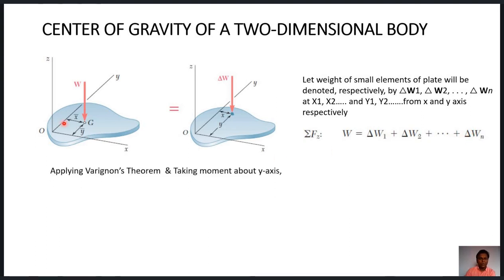To locate x̄ and ȳ, we use the concept of Varignon's theorem, which states that the moment of the resultant about an axis is equal to the sum of moments of all the forces about the same axis. We apply this theorem about both the x-axis and the y-axis. First, applying Varignon's theorem about the y-axis: the moment of the total weight W about the y-axis equals the sum of moments of all small elemental weights about the y-axis.